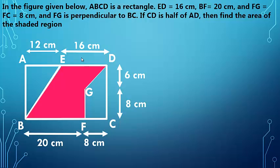In the figure given below, ABCD is a rectangle. ED equals 16 centimeters, BF equals 20 centimeters, FG and FC are both 8 centimeters, and FG is perpendicular to BC. If CD is half of AD, then find the area of the shaded region.